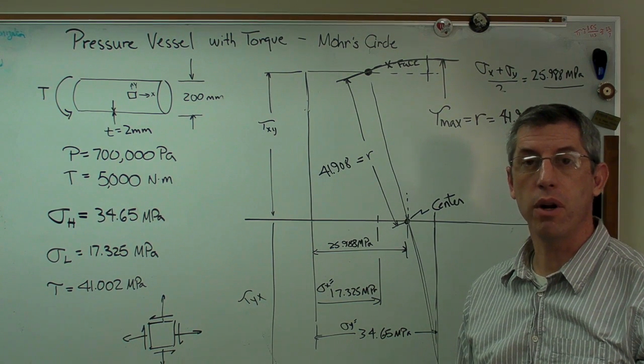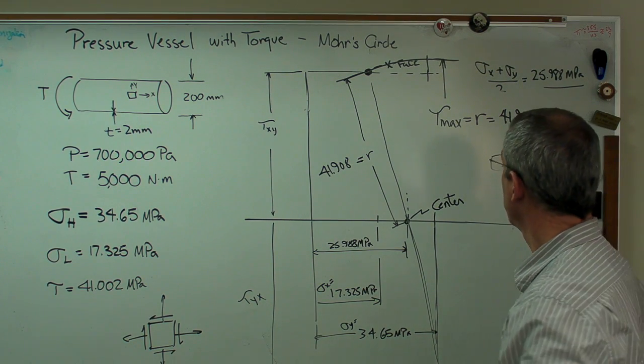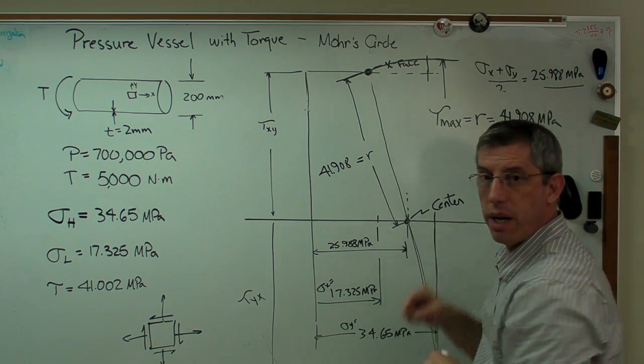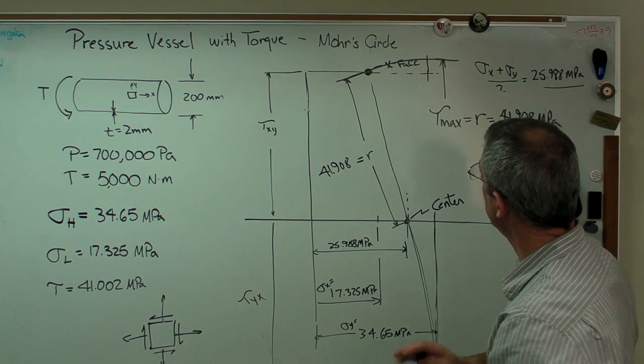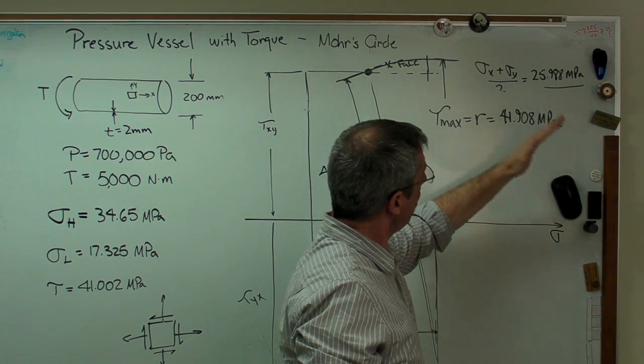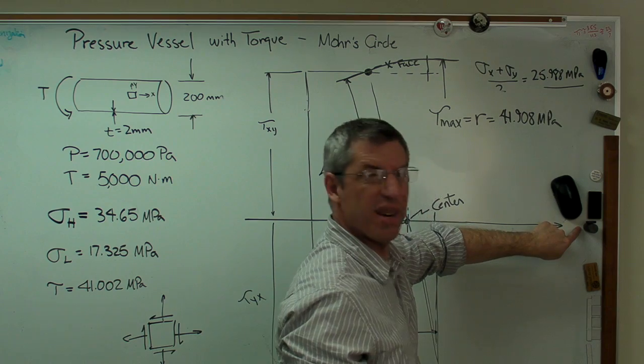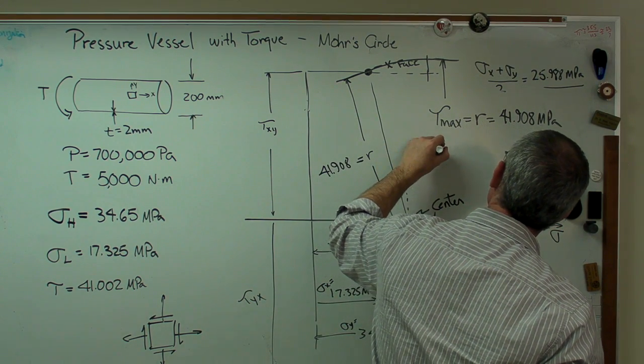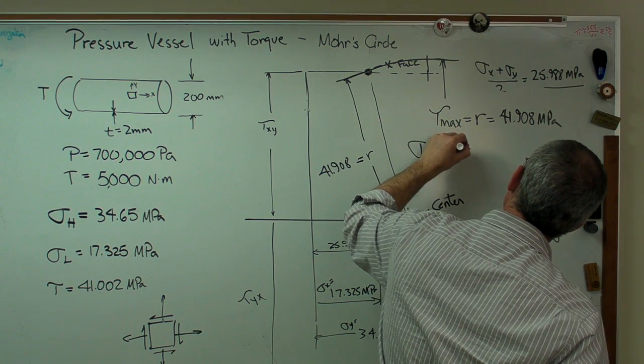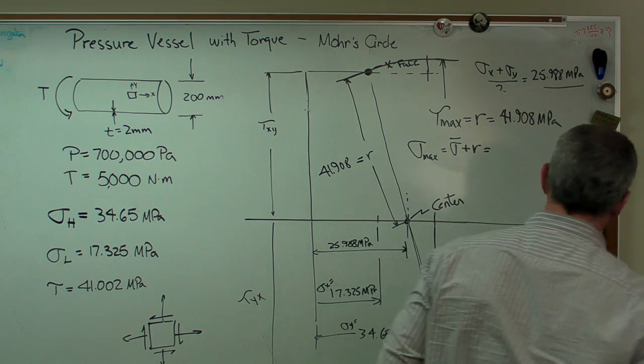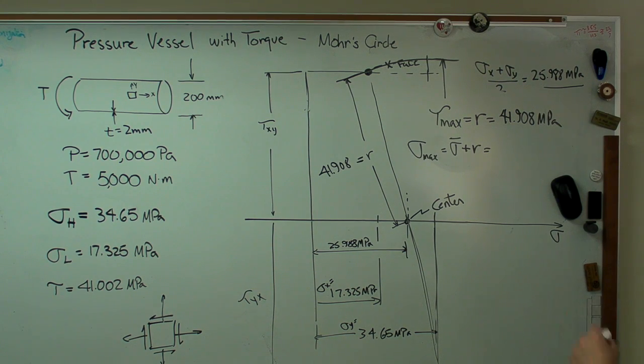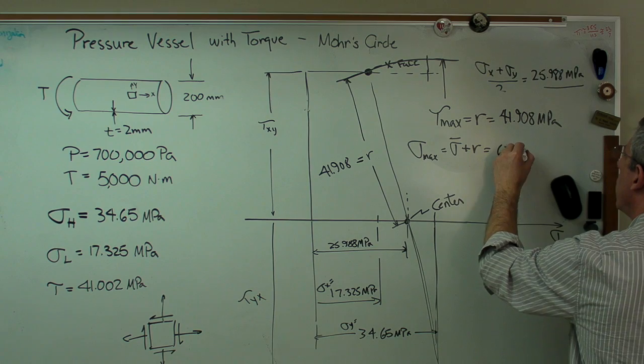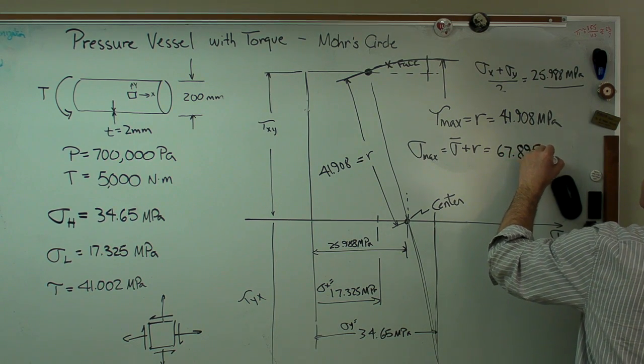The other thing I might want to know is sigma max. Well, sigma max is going to be the mean plus the radius, because although I don't have enough room to do it here, if I take this radius and I rotate it all the way over there, it's actually going to wind up about there on this screen. Sigma max equals sigma bar plus the radius. If we add those two numbers together, we get 67.895 megapascals.